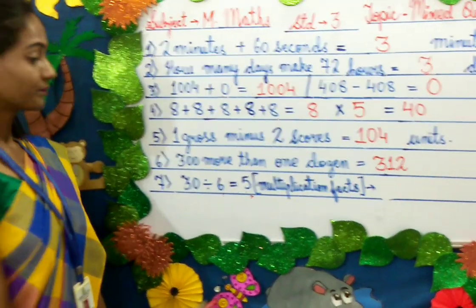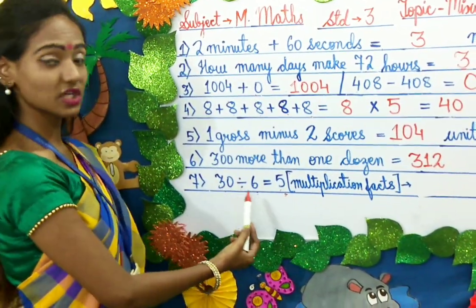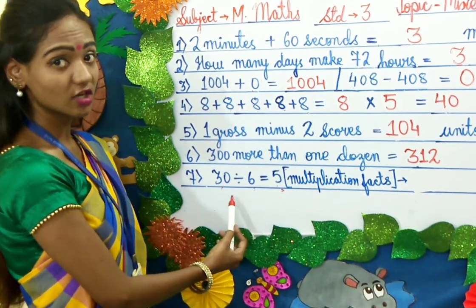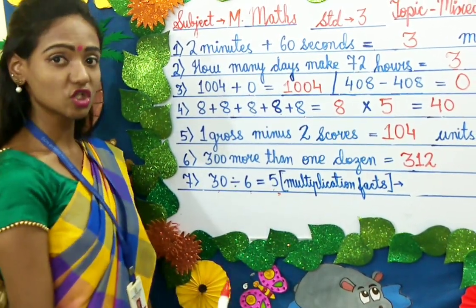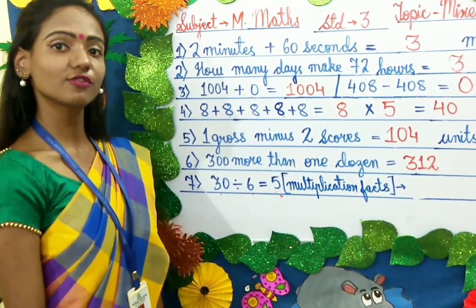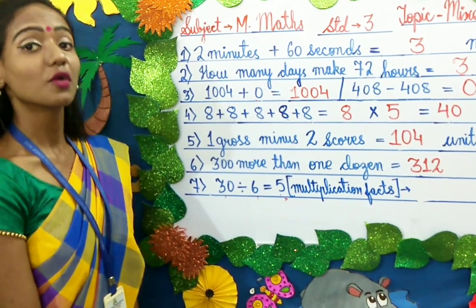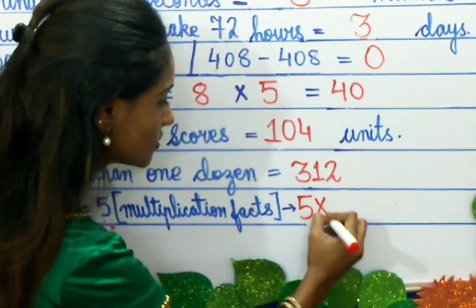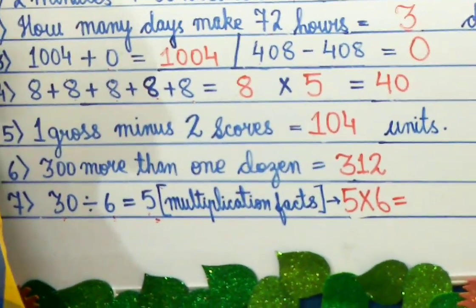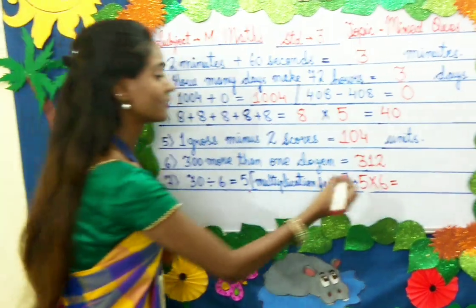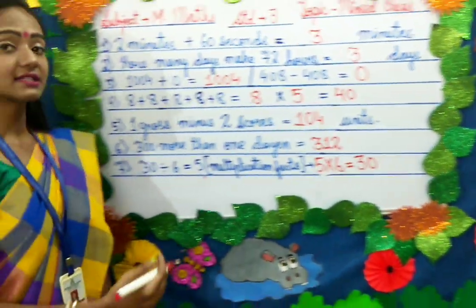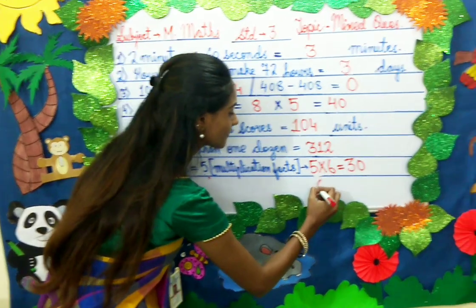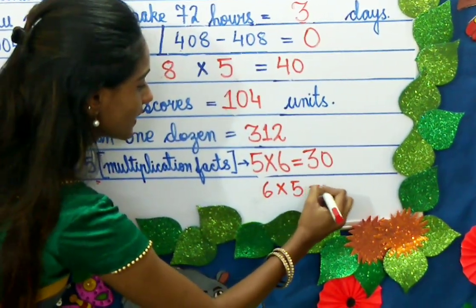The last question: multiplication facts. Look at the question — 30 divided by 6 equals 5. Here, 30 is your dividend, 6 is your divisor, and 5 is your quotient. Now we have to write this in multiplication form. We take the quotient and the divisor: 5 multiplied by 6 equals 30, which gives back the dividend. You can also write it as 6 multiplied by 5, and the answer is again 30.